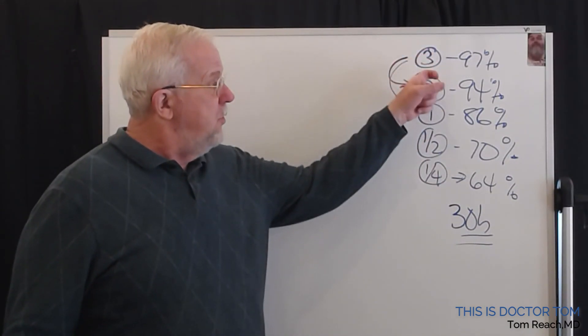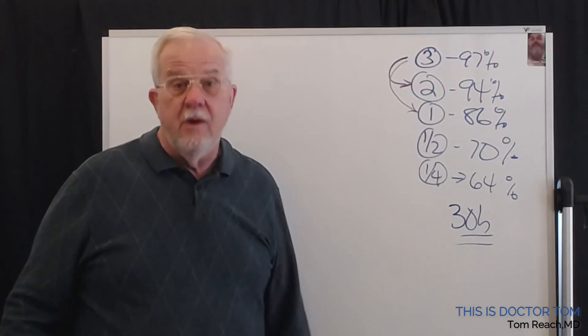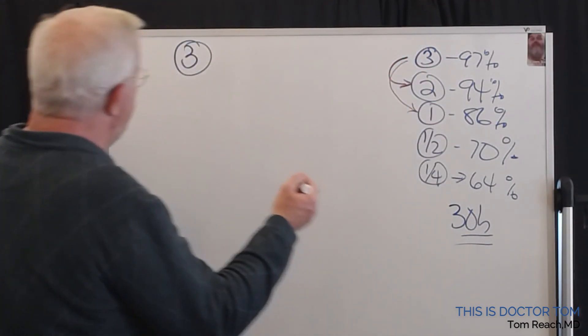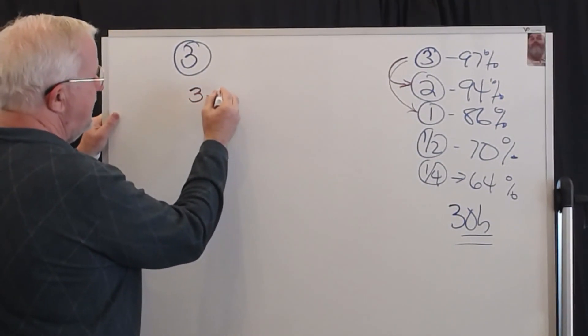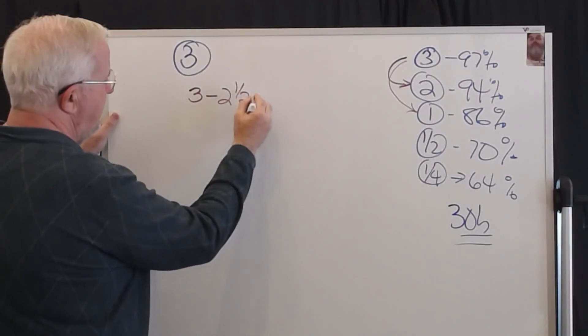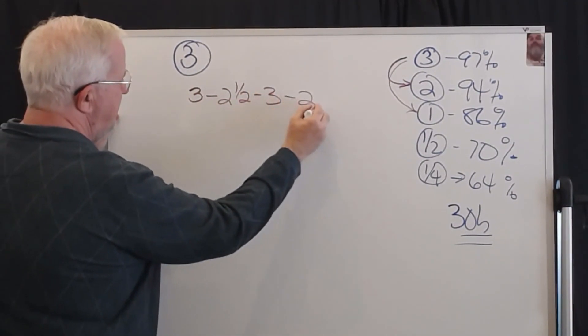So the first thing you want to do is get from three to two. That's relatively easy. If you want to do it in a reasonable fashion, you alternate every day. Three, two and a half. Three, two and a half.